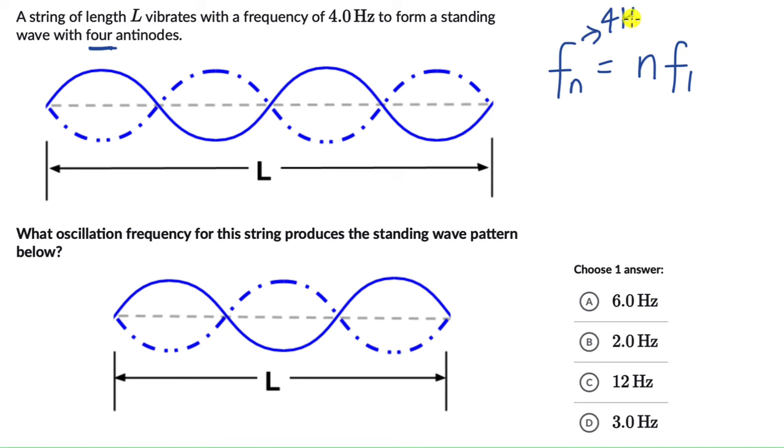There are 4 antinodes, 1, 2, 3, 4, so this is the 4th harmonic. So n becomes 4. Now from this we can figure out the fundamental frequency which is just 1 Hz, right?